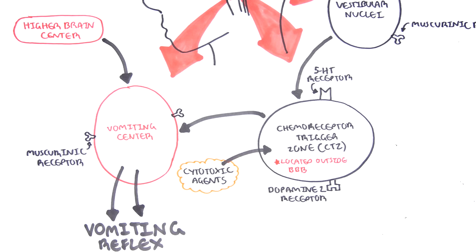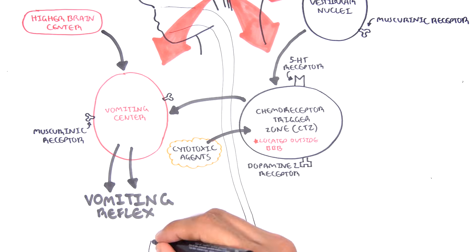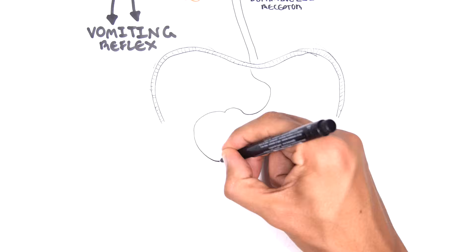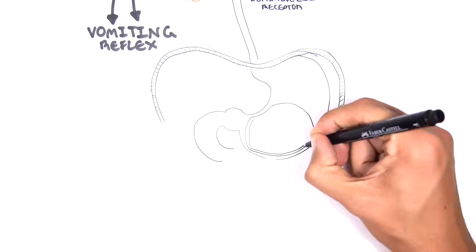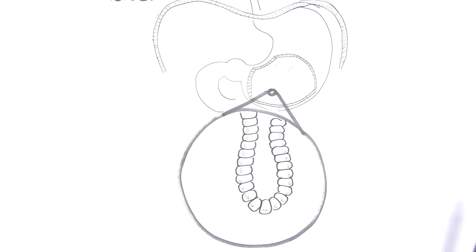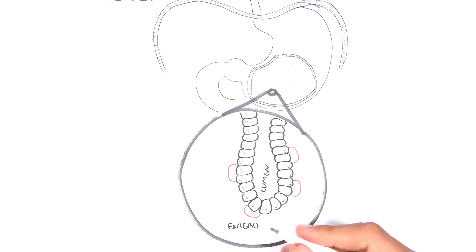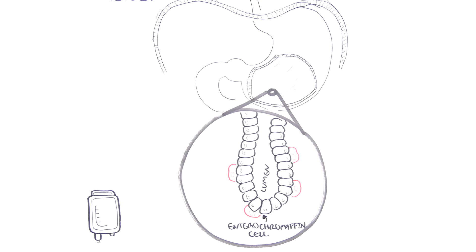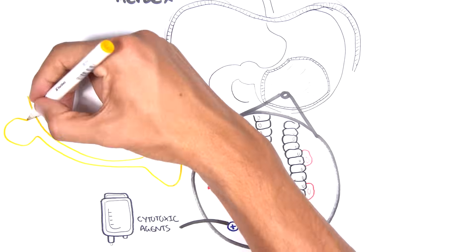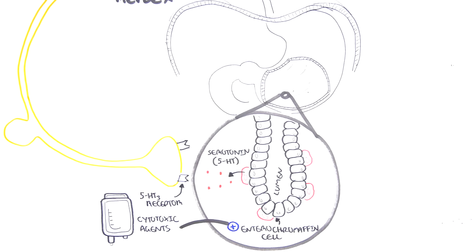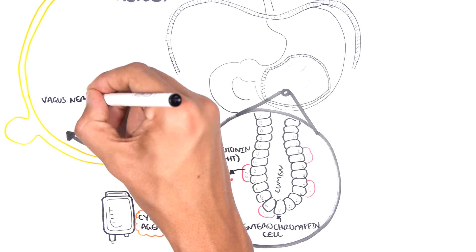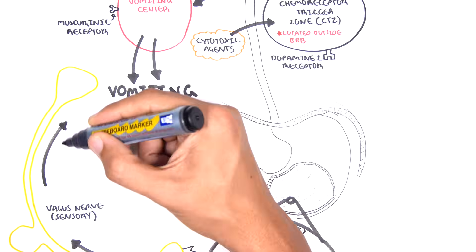Other causes of vomiting occur in the stomach. To recap the anatomy: the mouth connects to the esophagus, which travels through the diaphragm and joins the stomach, which then connects to the small intestine. In the stomach, deep pits and glands are lined by many cell types, including enterochromaffin cells. These cells release serotonin in response to cytotoxic agents, which stimulates 5-HT3 receptors on sensory nerve fibers. Stimulation of the vagal nerve then brings this information to the vomiting center to trigger the vomiting reflex.